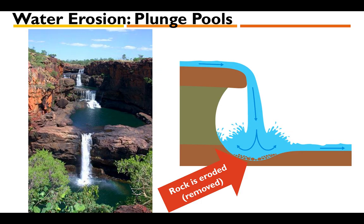Here are some pictures illustrating this: on the left is a real photograph showing how multiple waterfalls create plunge pools at the bottom of each one. On the right is a cartoon image showing the same process — as the water falls off the waterfall it breaks down the rock below, removing that rock, resulting in erosion and a change in the landscape.